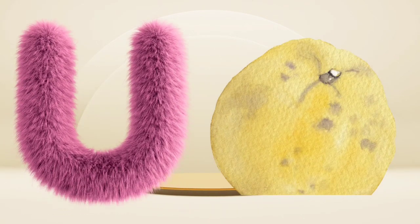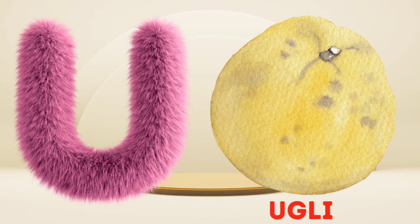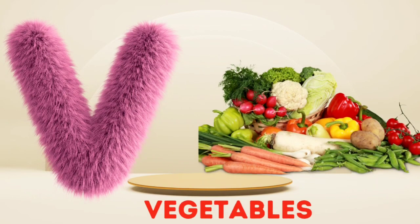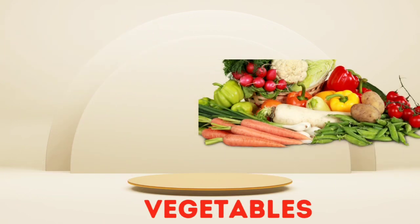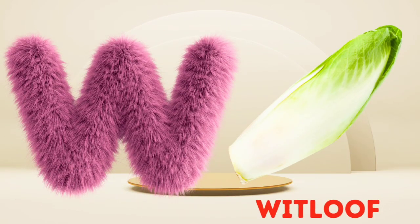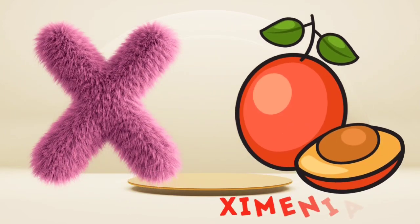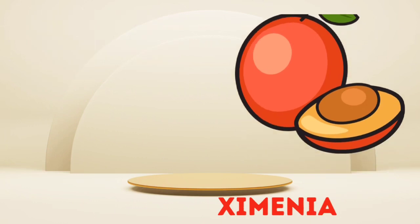U is for Ugly Fruit. U, U. Ugly Fruit. V is for Vegetables. V, V. Vegetables. W is for Whitloaf. W, W. Whitloaf. X is for Ximenia. Z, Z. Ximenia.